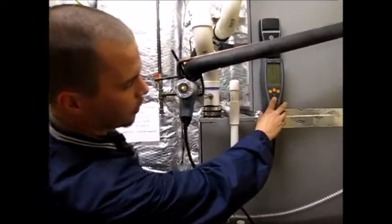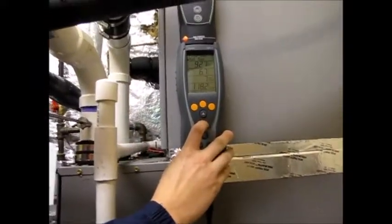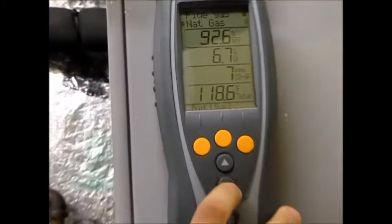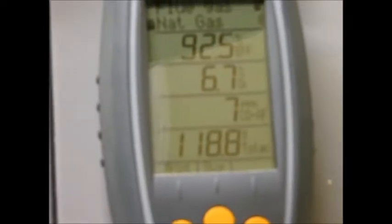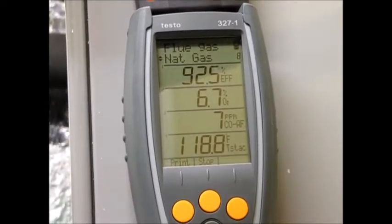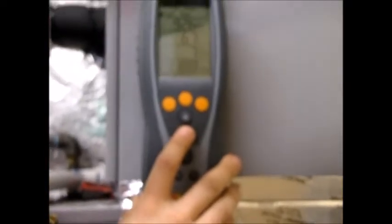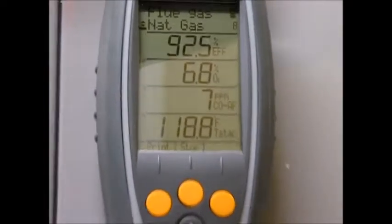If we scroll through real quick, it's showing that we're 92.7, 93% efficiency. We've got a 6.7 oxygen percentage, which our allowable values are between 5 and 7. We're definitely doing great on our actual parts per million of CO. We're well under 100, which is where we need to be.